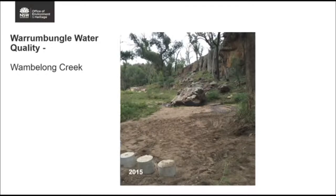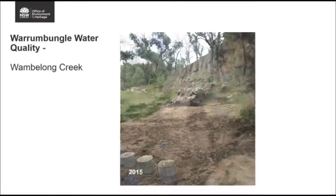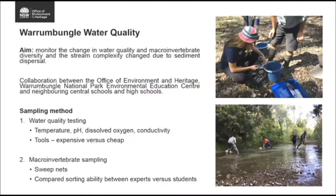The fires also left much of the park vulnerable to erosion due to minimal mid-storey and ground cover remaining. A large thunderstorm followed only about a month after the fire, washing a huge amount of sediment and organic matter into the creek. As you can see, this is Wobblewong Creek — a spring-fed creek — two years after the fire, still containing a lot of sediment. A couple of years later after further thunderstorms, the creek's stream bed complexity completely changed as the sediment dispersed.